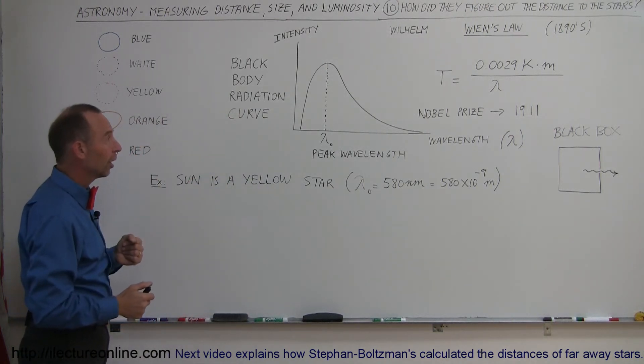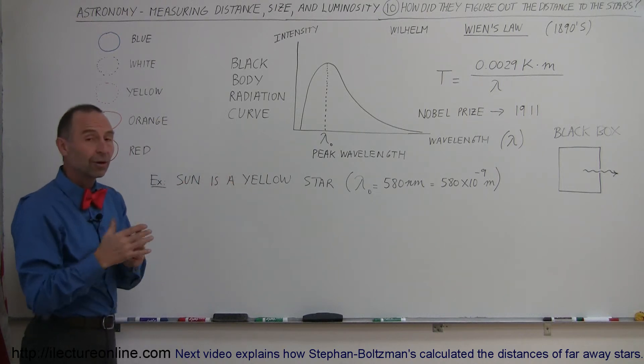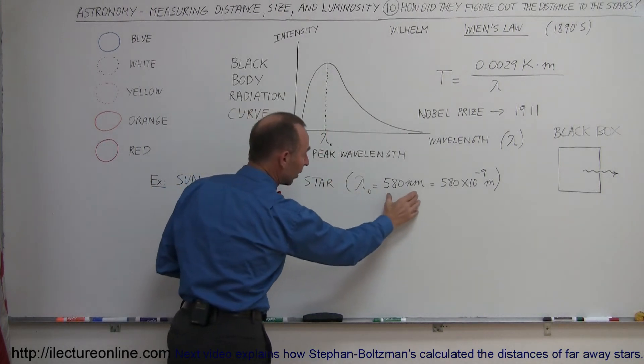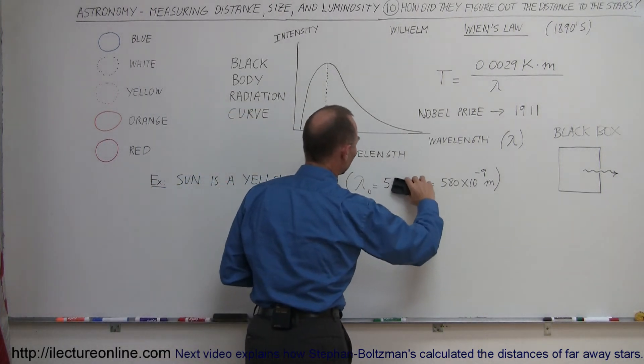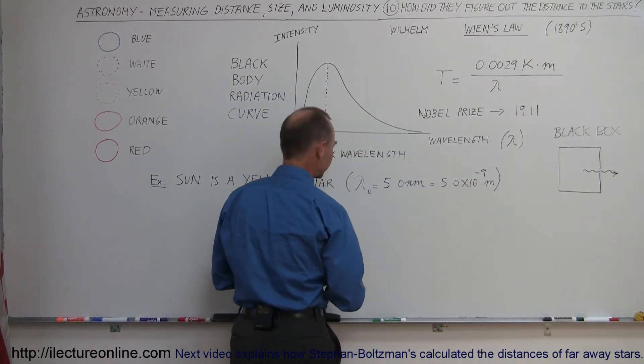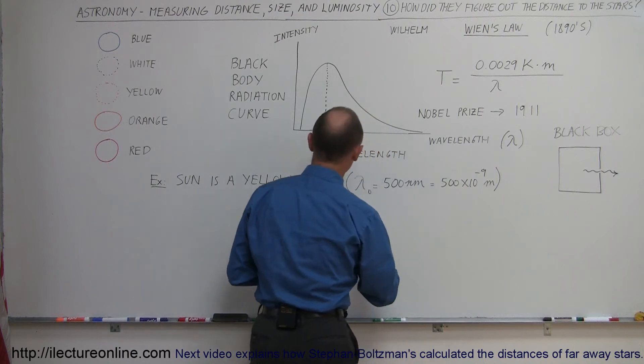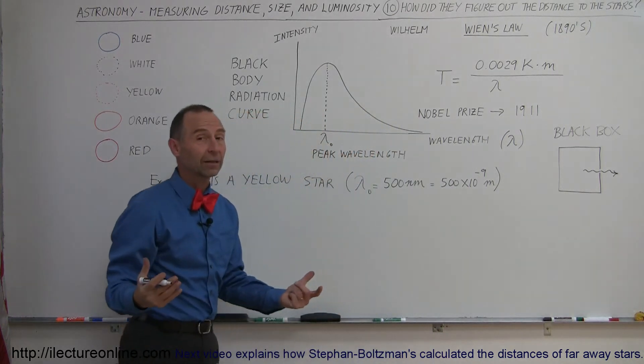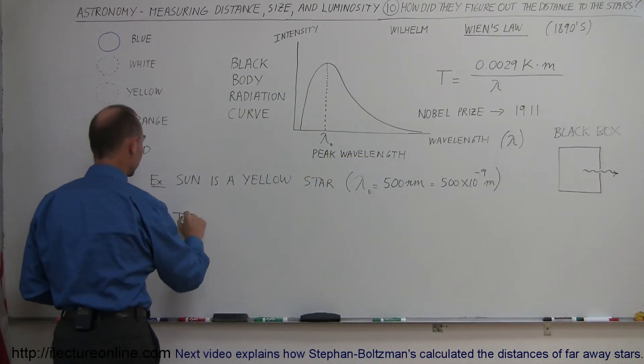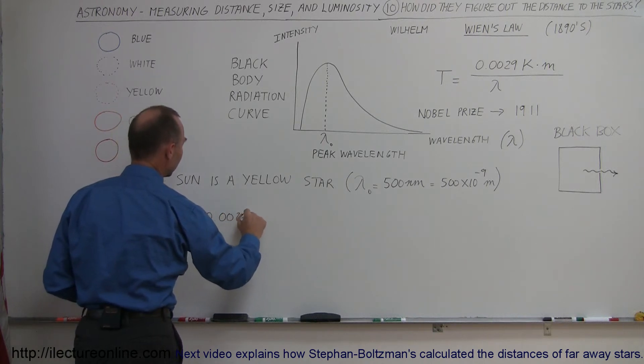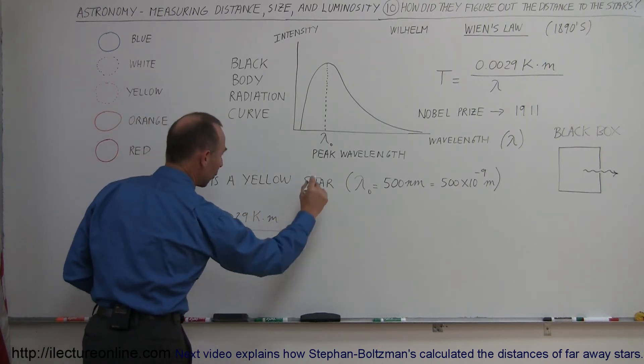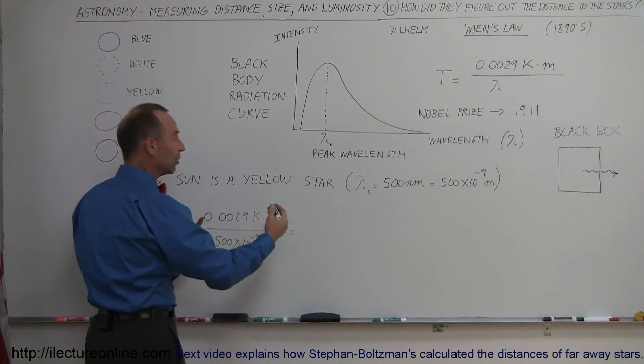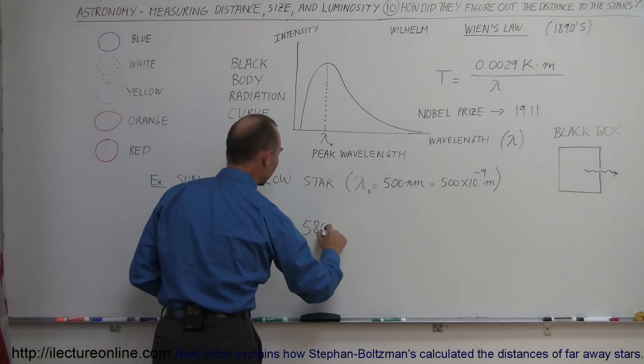And so when he applied that equation to the radiation coming from the sun, and of course the sun is a yellow star, and the yellow star has a wavelength, a peak wavelength of about 500 nanometers - so make this 500. So if you then plug this number, 500 nanometers, into Wien's law, we should be able to figure out the temperature of the sun. And that's what he did. So he said the temperature of the sun is equal to 0.0029 Kelvin times meters divided by the wavelength coming from the star, which is 500 times 10 to the minus 9 meters. And when you work that out in your calculator, you get 5,800 Kelvin.